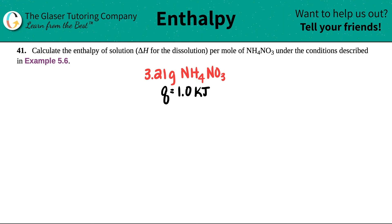Number 41. Calculate the enthalpy of the solution, aka the delta H for the dissolution, per mole of NH4NO3, so ammonium nitrate, under the conditions described in example 5.6.